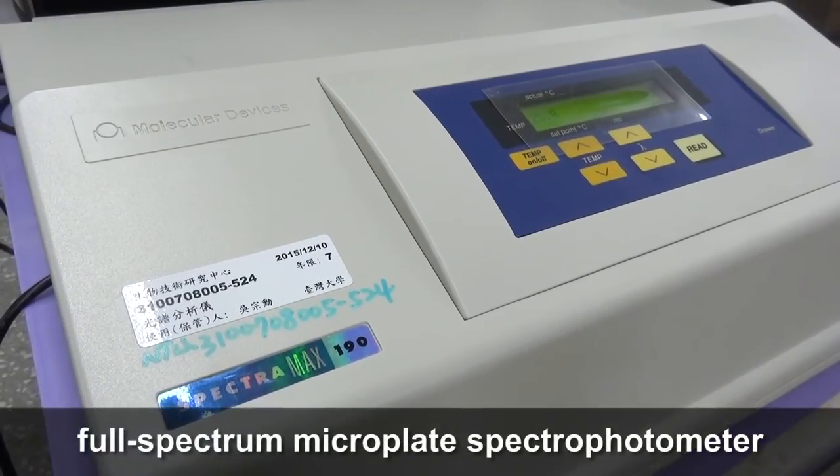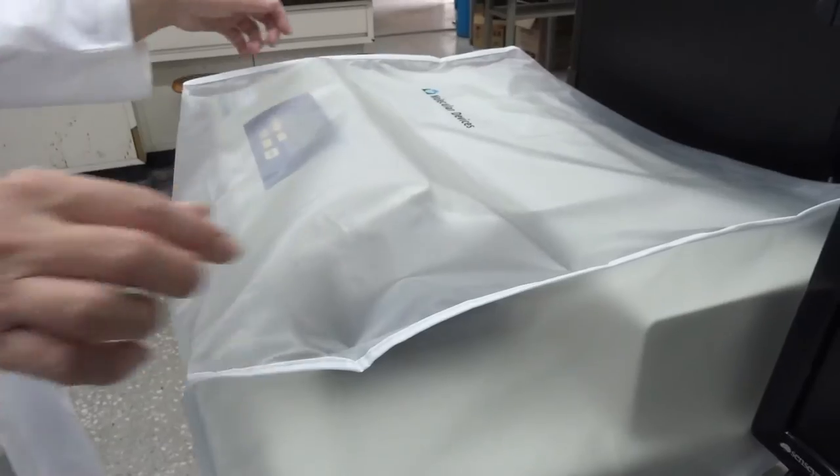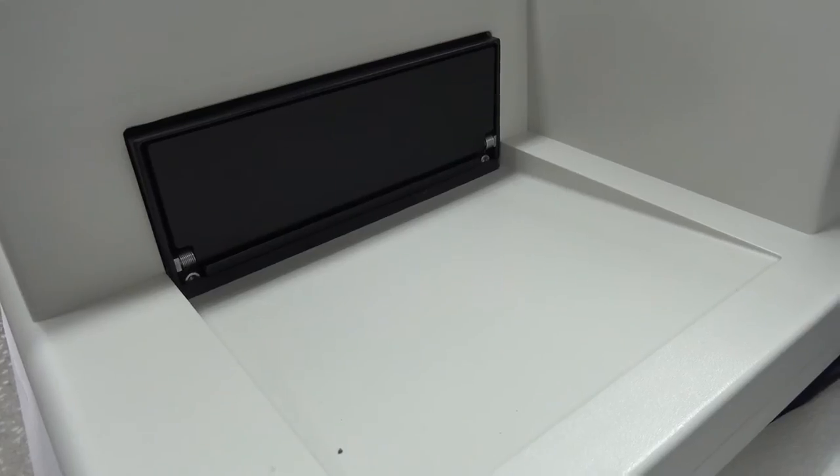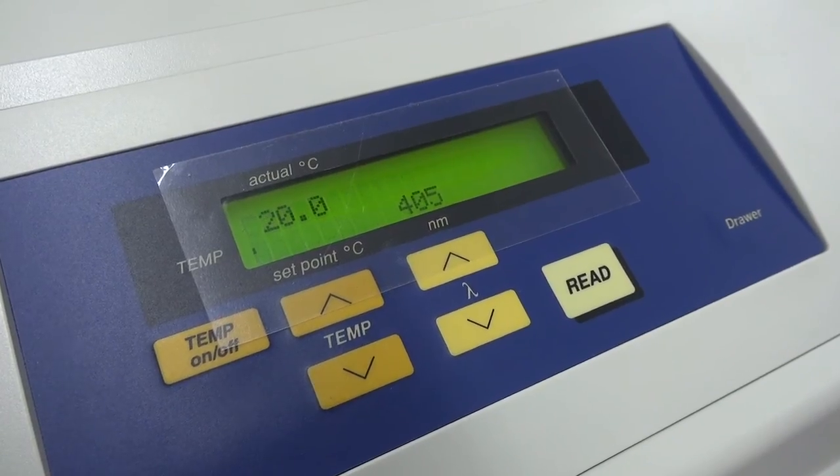B. Now we demonstrate how to operate a full-spectrum microplate spectrophotometer. 1. Remove the dust cover and turn on the machine. Wait for the microplate holder to extend out and start up to be completed.